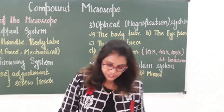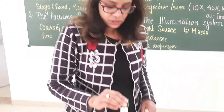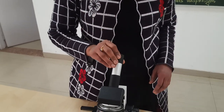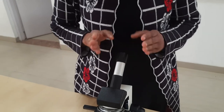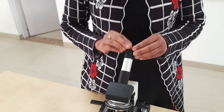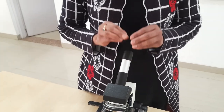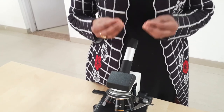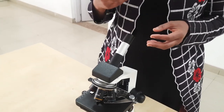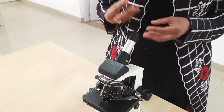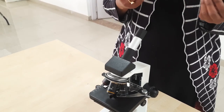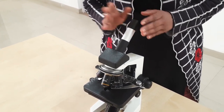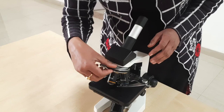The upper portion is known as the eyepiece, which contains the lens known as the eye lens. The power of the eye lens in this microscope is 10x, though it may vary — some microscopes have 5x, 6x, or 8x eyepieces.